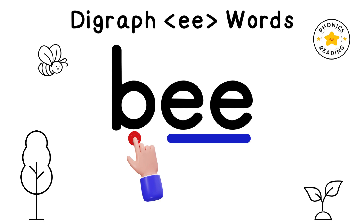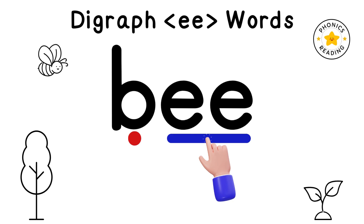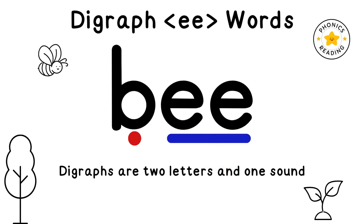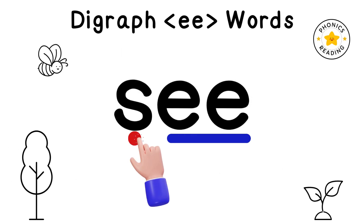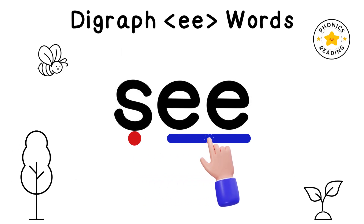Let's read. B, E, B. EE is a digraph. Digraphs are two letters and one sound. S, E, C.